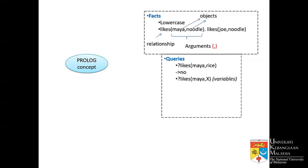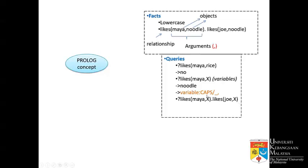In the second question — what does Maya like? This is an unknown variable, something that is not known, so we can represent it with X, Y, Z, or whatever, as long as it is in caps. So what does Maya like? The compiler will look into all the facts and see what Maya likes, and whatever object is in the second position will be the answer for the query. So in this case it will display 'noodle'. If we declare another fact like 'Maya likes flower', when you press enter you get 'flower' as a second answer. Variables like X, Y, Z are written in caps.